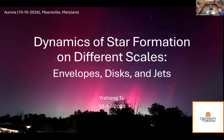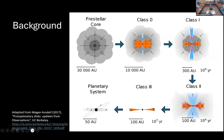Thank you very much. I'll be talking about the dynamics of star formation across different scales — from the envelope, disk, and the jets. Star formation is a process across many scales. It starts from the collapse of a pre-stellar core to the formation of a protostar and a protostellar disk in the Class 0 and Class 1 phase.